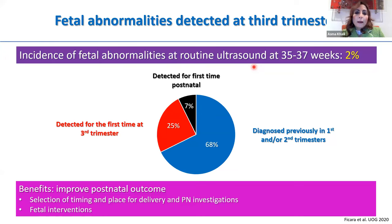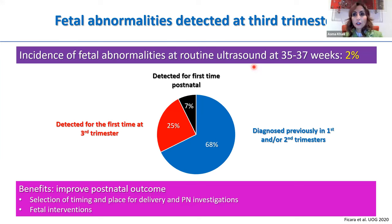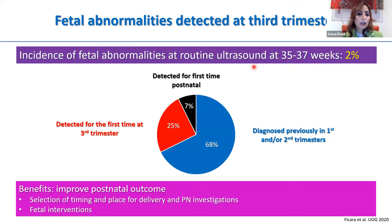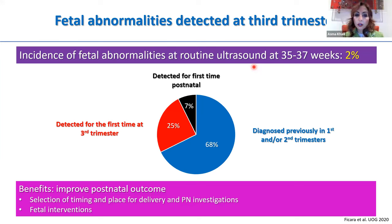There are multiple benefits to diagnosing fetal abnormalities in the third trimester, potentially improving postnatal outcomes through selection of timing and place of delivery. Some abnormalities require delivery at a surgical or tertiary centre because the baby needs immediate intervention or postnatal investigation. In some cases, prenatal intervention can improve outcomes, such as pleural drainage or shunting. And, depending on where you practice, late termination of pregnancy may also be an option.